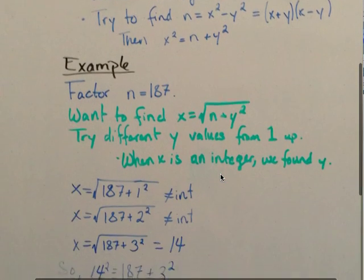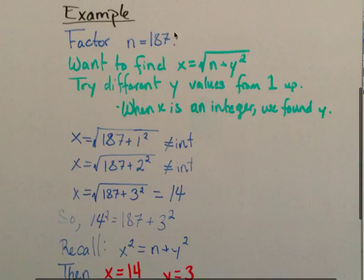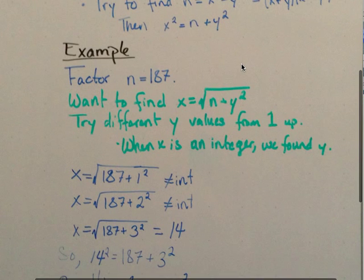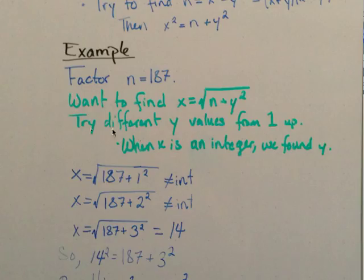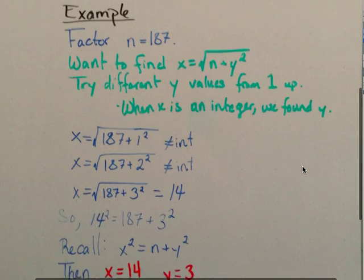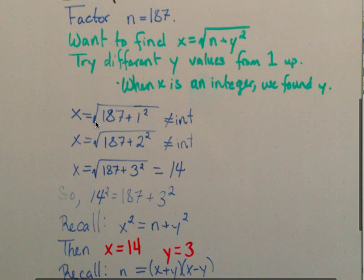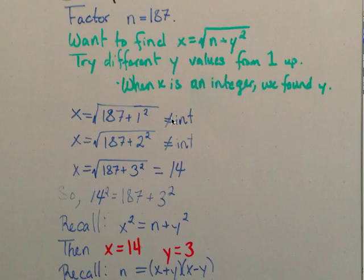For example, if we want to factor n equals 187, we want to find where x equals the square root of n plus y squared — all I did was take the square root of both sides. We want to try different y values starting from one and working our way up. When x turns out to be an integer, we have found a y value that works. So we take the square root of 187 plus 1 squared and find that it is not an integer.